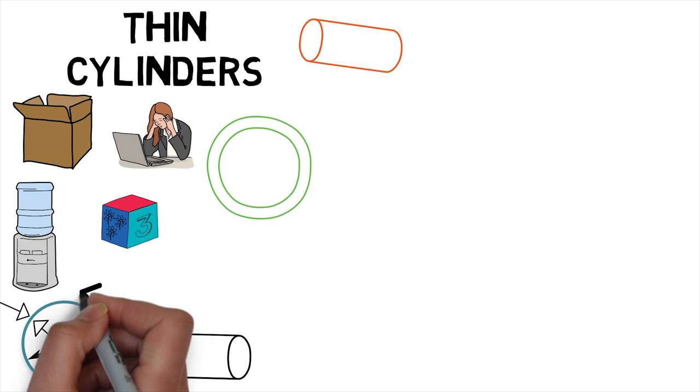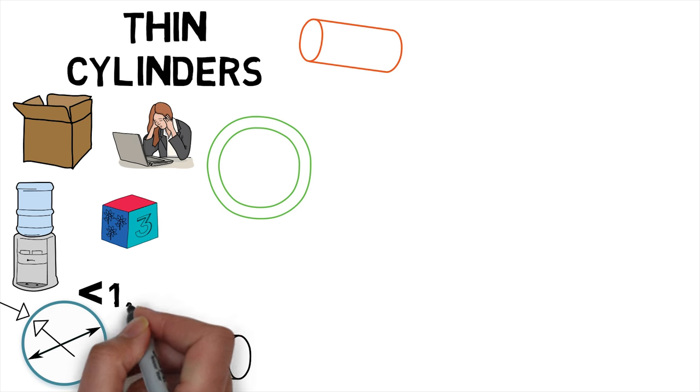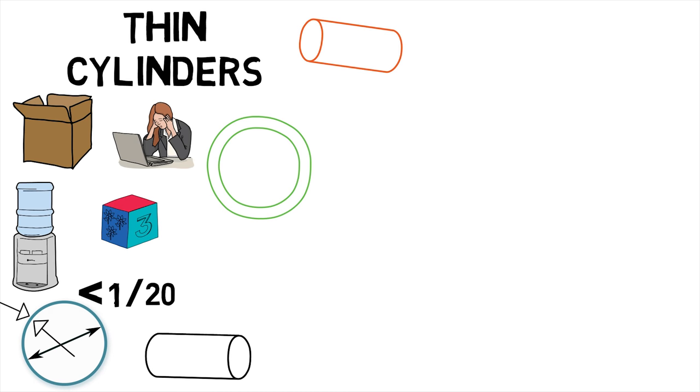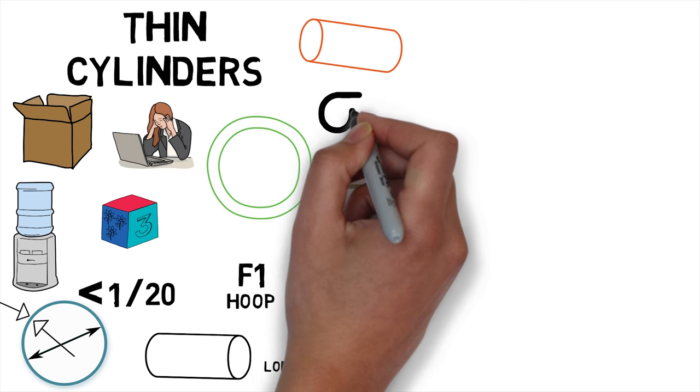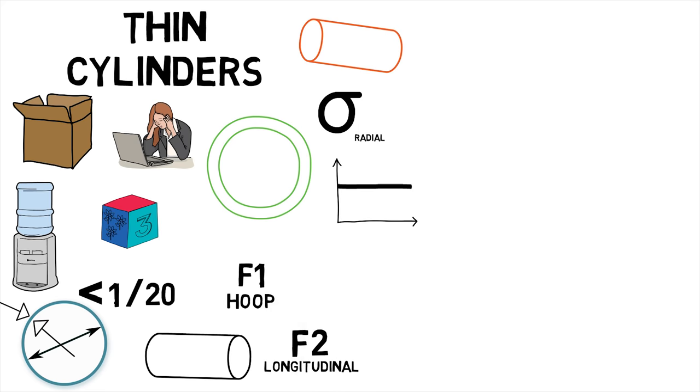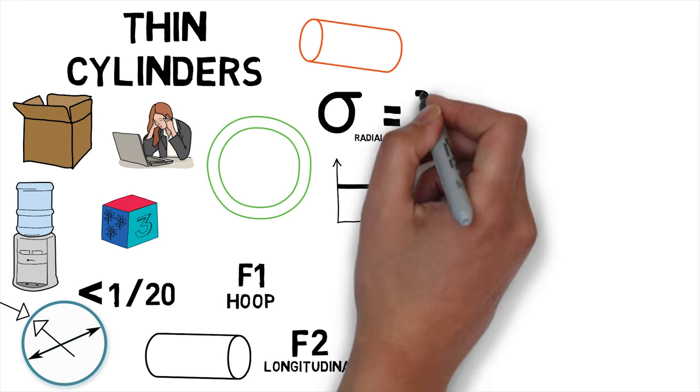If the cylinder walls are thin and the ratio of the thickness to the internal diameter is less than about 1 by 20, then it can be assumed that the hoop and longitudinal stress are constant across the thickness. It may also be assumed that the radial stress is small and can be neglected.